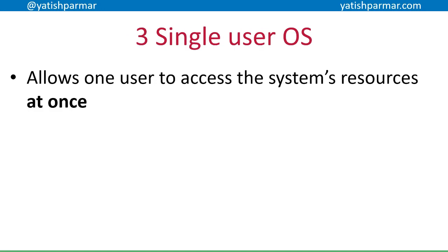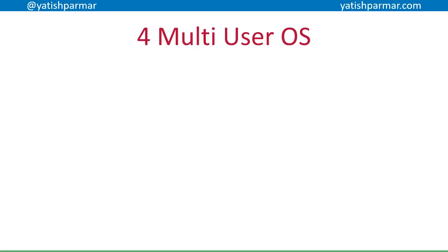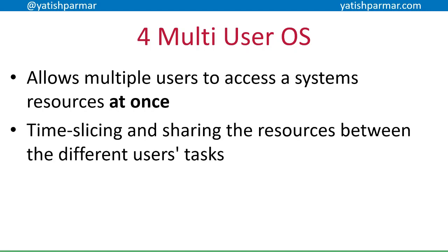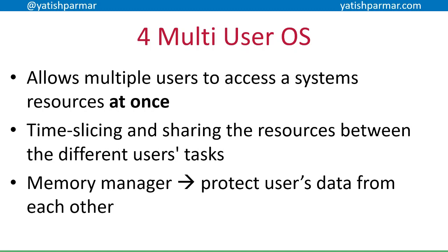The third type is a single-user operating system, where only one user is accessing the system's resources at any one point in time. The opposite is the fourth type — a multi-user operating system — where multiple users use the system's resources at the same time, making use of time slicing to share resources. The memory manager plays a very important role here, protecting each user's data from other users to maintain security.